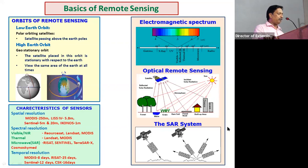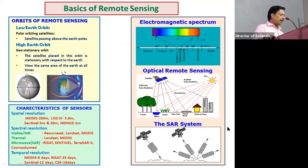The first is spatial resolution. In any pixel of imagery, how much area does one pixel correspond to at the ground level. For example, one meter resolution means it can discriminate objects larger than one meter in size — that is the basic understanding.